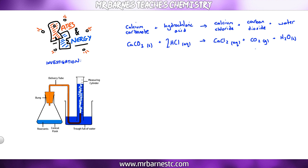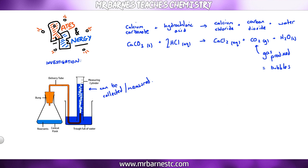The key thing here is that a gas is going to be produced. If that gas is produced, you will see bubbles, and those bubbles can be collected. If you can collect them, you can measure them and see how changing different things affects the rate of reaction.